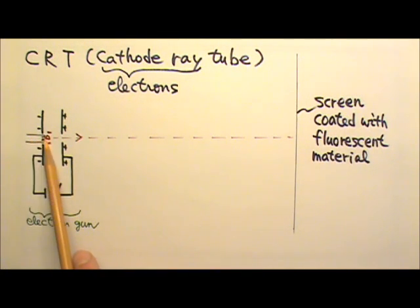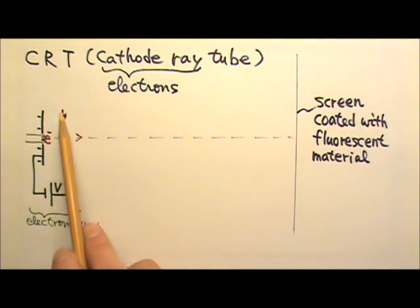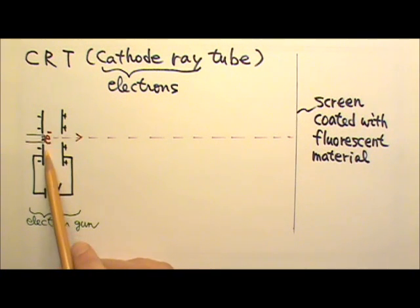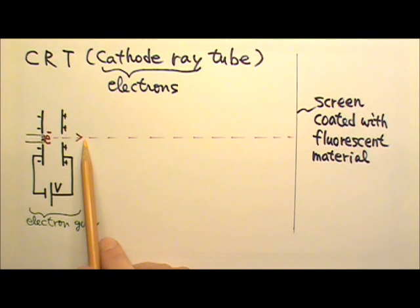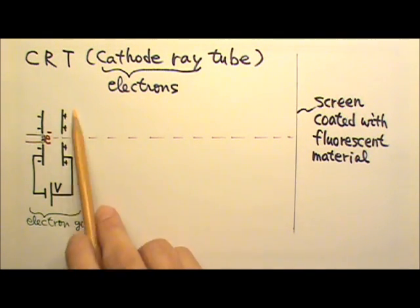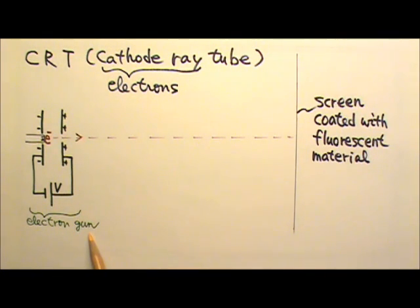Usually it starts with a filament that we send the current through to heat up. Some electrons in the very hot filament get enough energy to leave the filament and enter this region between the parallel plates. The electrons then get accelerated by the electric field in between and come out the other side traveling fast. This part is what we call an electron gun because it shoots the electrons out.